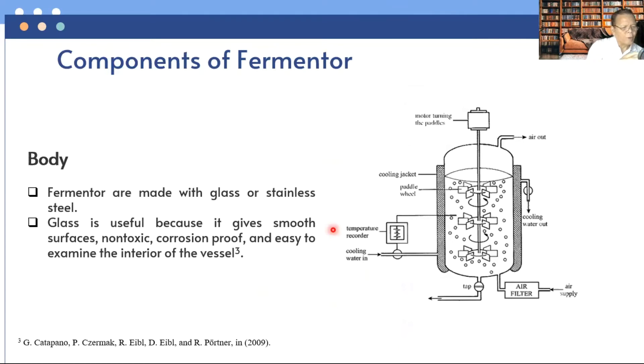There are several components in the fermentor. The first is the body of the fermentor. Fermentors are made with glass or stainless steel. Glass is useful because it gives smooth surface, is non-toxic, corrosion-proof, and easy to examine the interior of the vessel. In pilot scale or industrial scale, vessels are normally constructed with stainless steel or sometimes chromium or nickel.